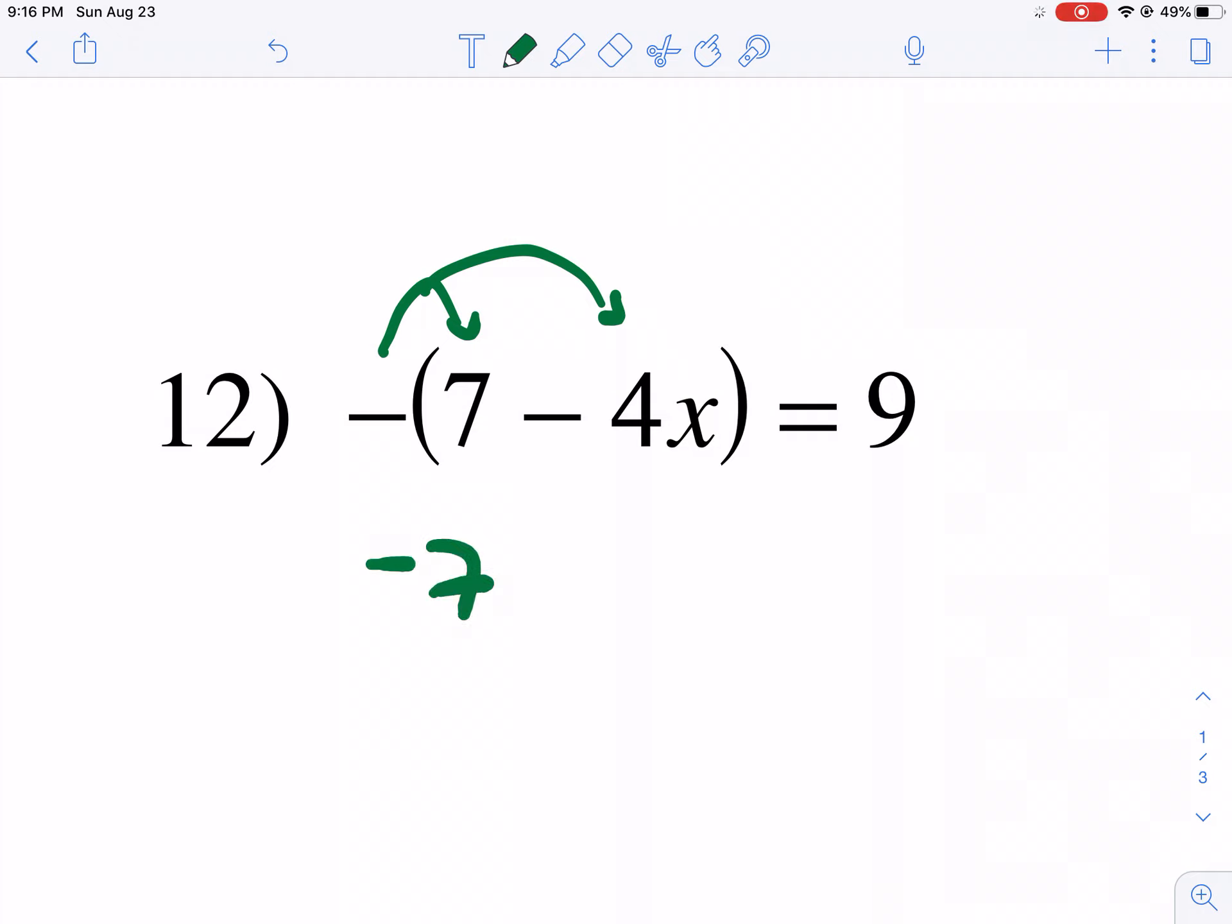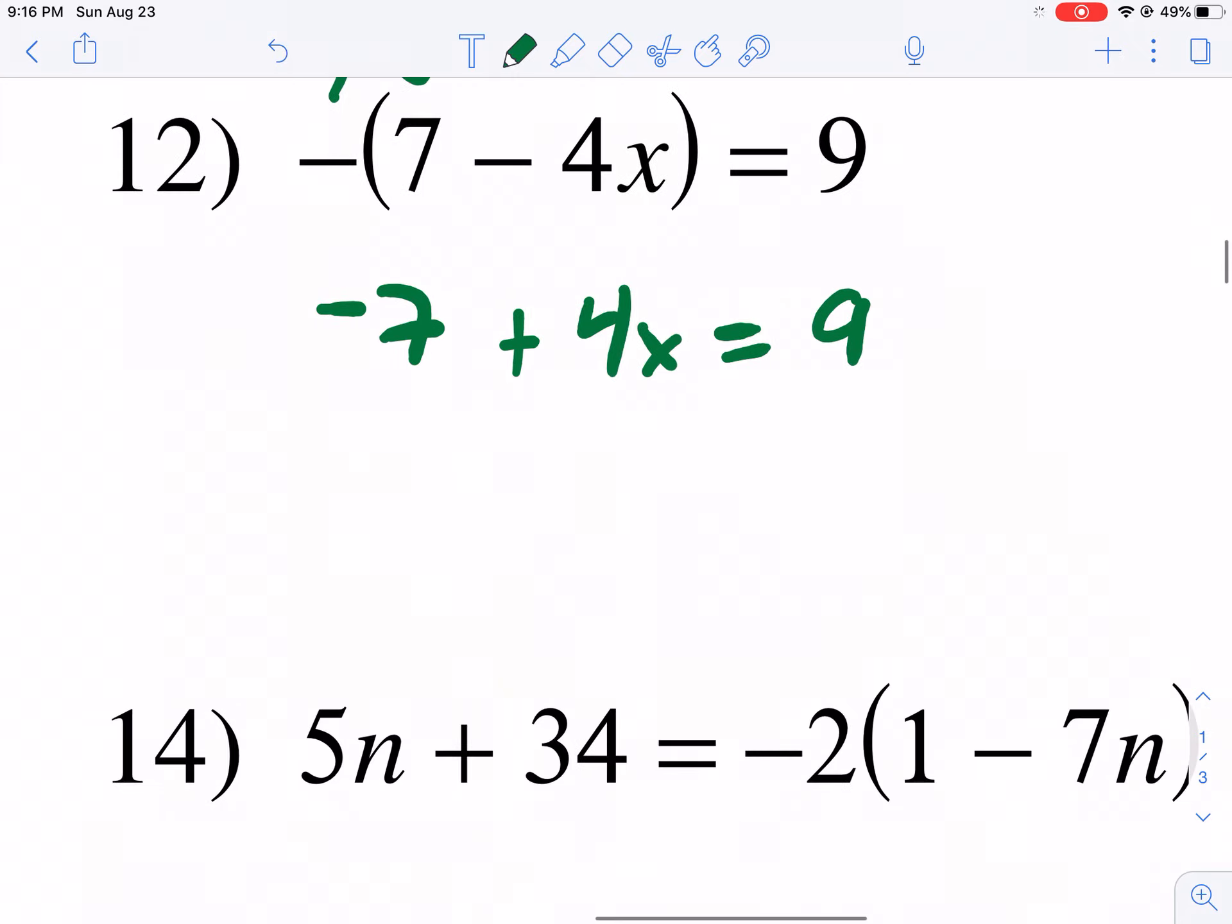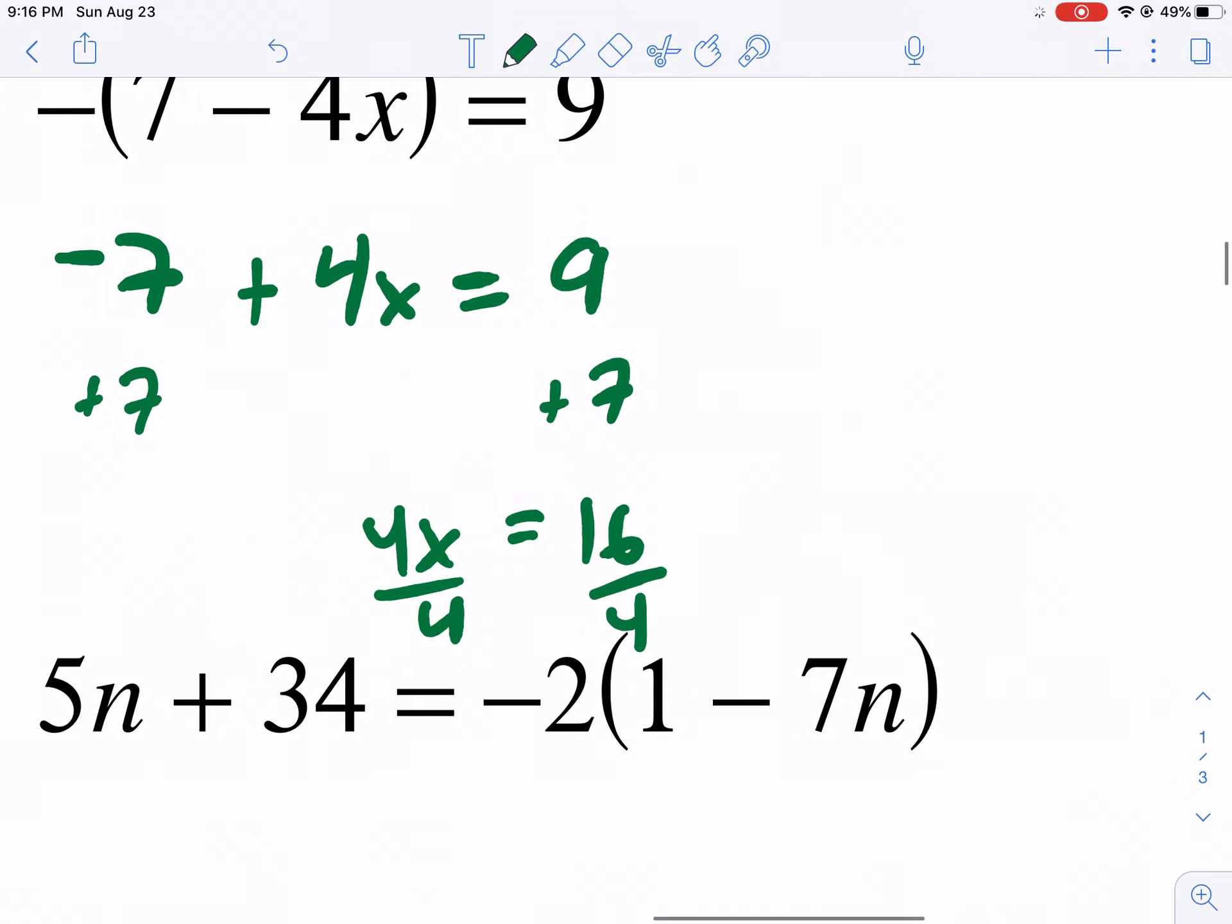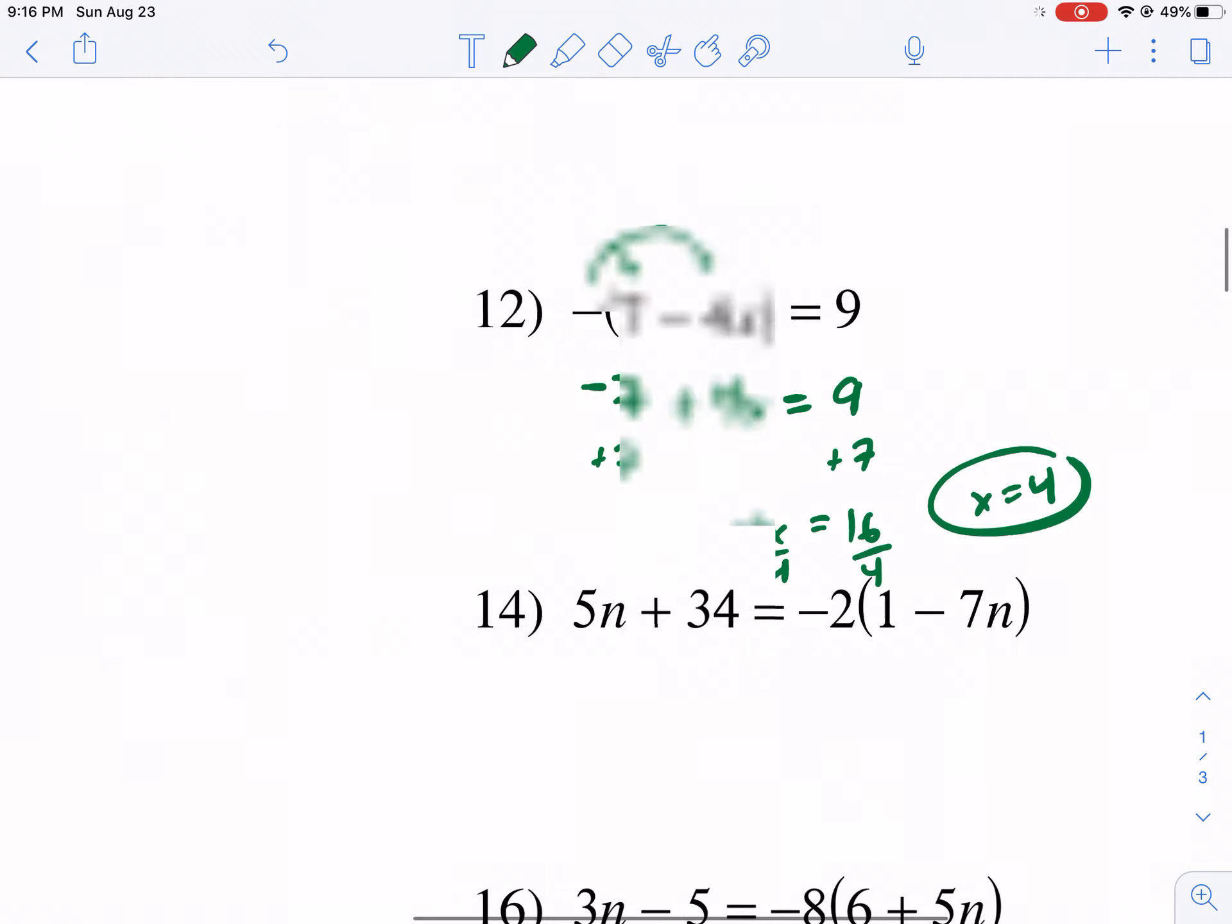So we have negative 7, and then positive, negative, negative, negative times negative equals positive, 4x equals 9. Now it's just a two-step. We add 7 to both sides. So we get 16 equals 4x. We divide by 4, opposite operation, multiply by 4, and we get 16 over 4, or just 4. So 4 is our answer there.